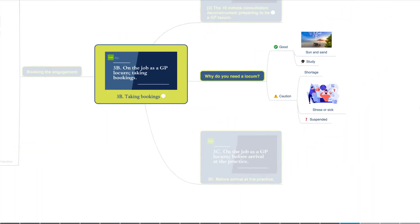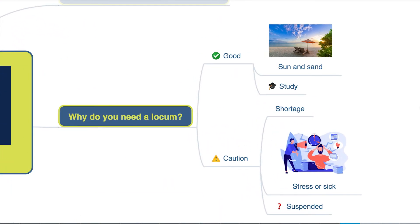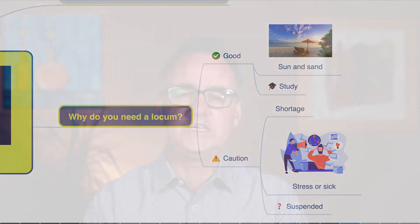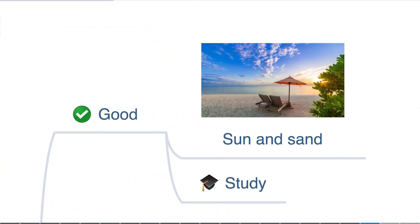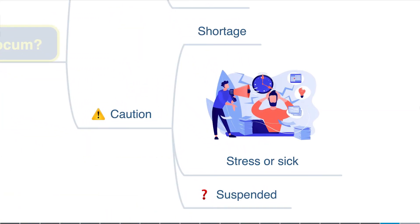One last tip: if possible, in the early stages of making a booking it's worth asking why a practice needs you, as this can help give you an understanding of what to expect when you're working there. A practice that plans ahead and books a locum to support the practice when one of the GPs goes on planned leave suggests the practice takes a proactive approach to supporting welfare and workload. Whereas difficulties in recruiting and retaining GPs might suggest something else — for some this might sound alarm bells, but for others it indicates both a challenge and an opportunity to help out colleagues who are struggling in a practice that needs support.